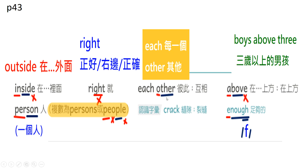接着是 Each Other：Each每一个，Other其他的，每一个其他就是彼此，We love each other（我们爱着彼此）。Above，一个音节，B-O-V-E，E不发音，在上面、在上方，也是介系词。也可以表示「以上」，比如说 Boys above three，三岁以上的男孩。